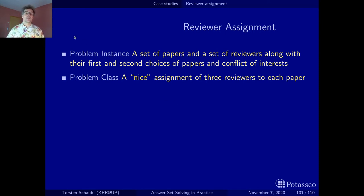So here's again the problem instance and the problem class, just to set this in stone. The problem instance is you have a set of papers and you have a set of reviewers. And the reviewers have declared their preferences: first choice, second choice, conflict of interest.